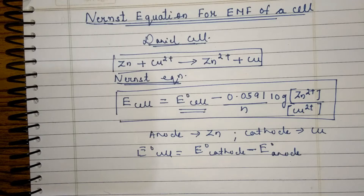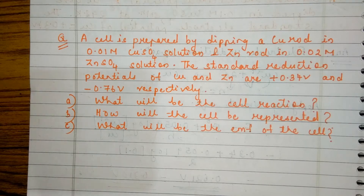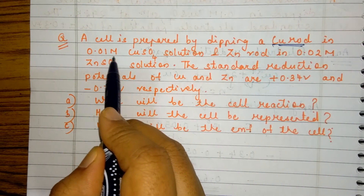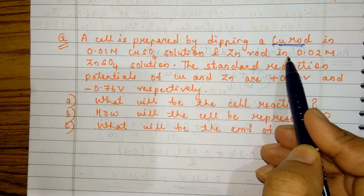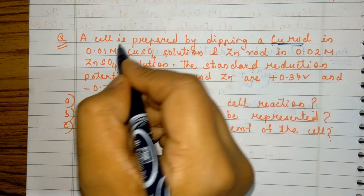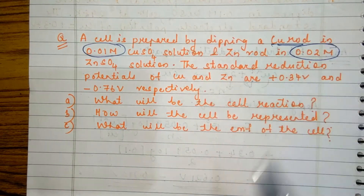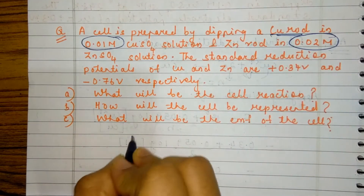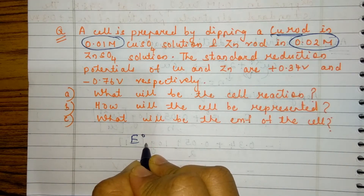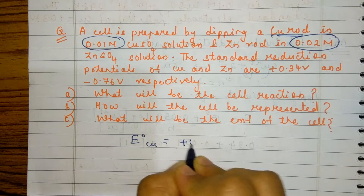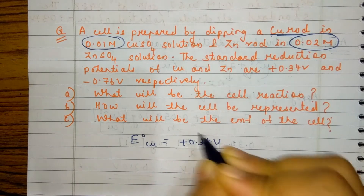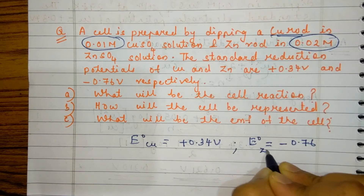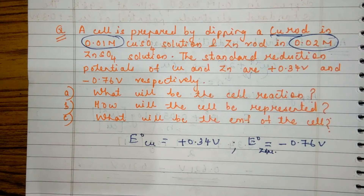Based on that, let us do some problems. In the first question, a cell is prepared by dipping a copper rod in 0.01 molar copper sulfate solution and a zinc rod in 0.02 molar solution. The standard reduction potential for copper is given as +0.34 V and for zinc it is given as −0.76 V.